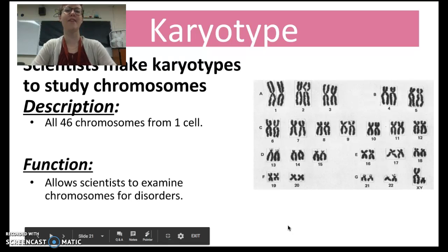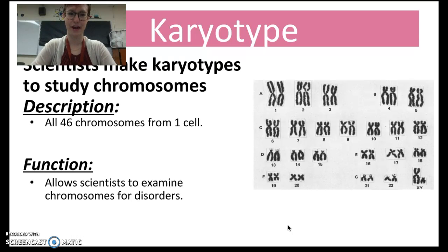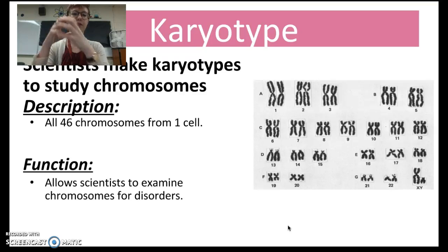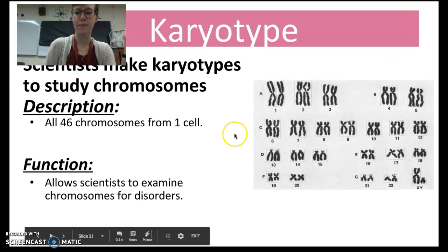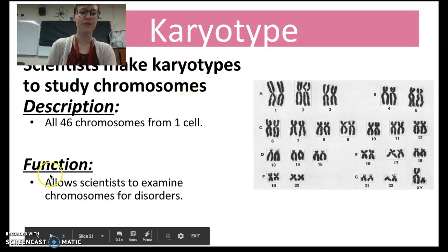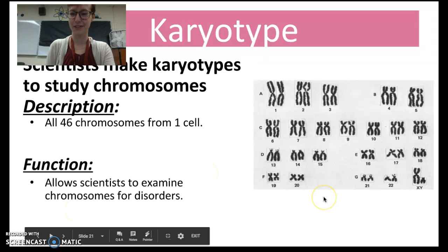Last but not least, we have this thing called a karyotype. Scientists make karyotypes to study chromosomes. What they do is take a cell, crack it open, open the nucleus, pour out all 46 chromosomes from one cell, and line them up — this is 46 chromosomes in all. The purpose of a karyotype is to allow scientists and students to examine chromosomes for disorders. We're going to talk more about karyotypes later this semester, but I just wanted to give you a brief introduction.